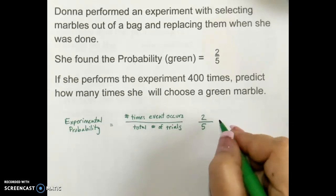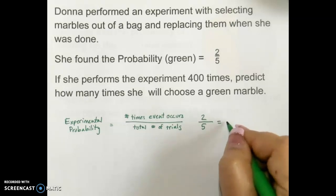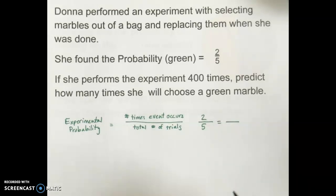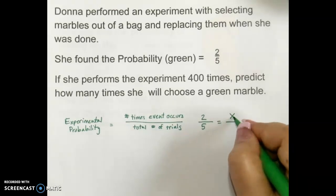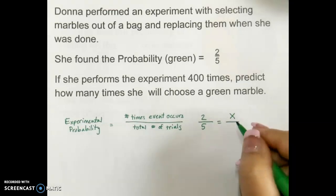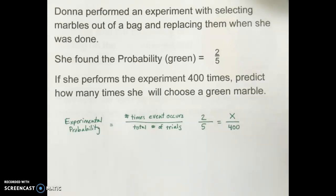We can set up a proportion using that probability and putting that equal to another ratio where we try to figure out how many times she will choose green out of how many times she does the experiment.